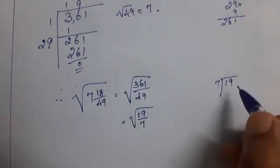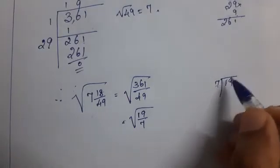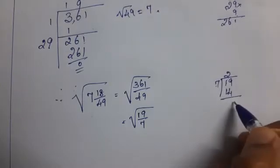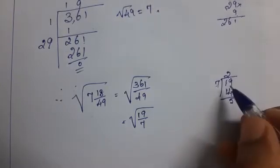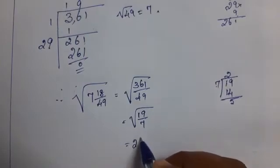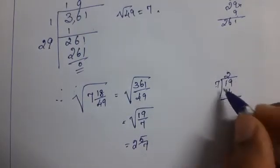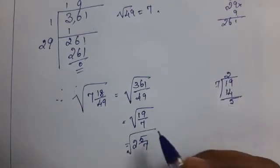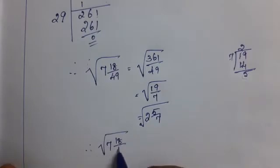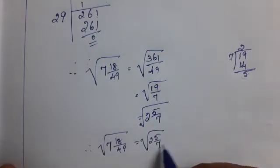Mixed fraction is equal to: 19 divided by 7. 1 seven is 7, 2 sevens are 14. Remainder is 5. Therefore: quotient is 2, remainder over divisor is 5 by 7. First write the quotient, then write the remainder divided by the divisor. Therefore, square root of 7 and 18 by 49 is equal to 2 and 5 by 7.